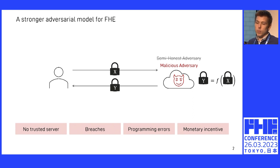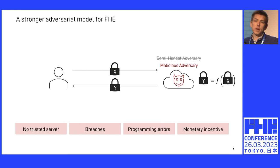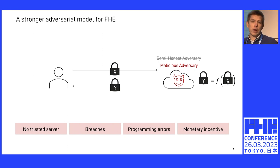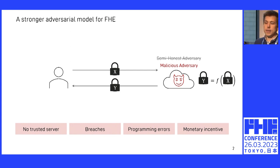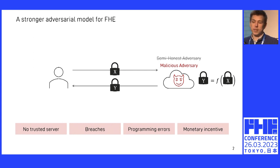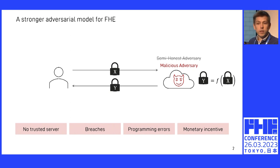For example, when we use transport layer security in our applications, we usually assume that the link is under the control of a malicious adversary. Even if you trust your favorite cloud provider to be honest, there's always a case of breaches. There's always the threat that you would have programming errors, and so even if the server is honest, you still deviate from the protocol as intended. And finally, there's also monetary incentives — the cloud might want to access your data to extract some value from it, or it might want to compute a function F that is cheaper than the one you specified.